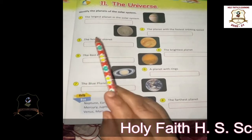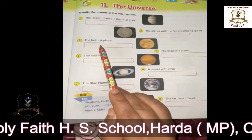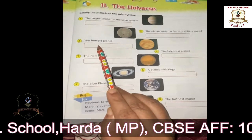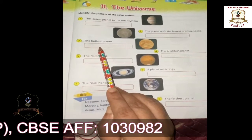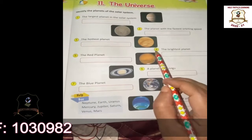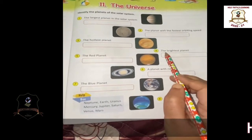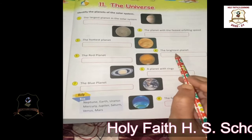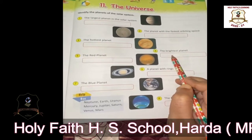Third: the hottest planet. Which is the hottest planet? Venus is the hottest planet. And the brightest planet — which planet is called the brightest planet? Again, the answer is Venus.